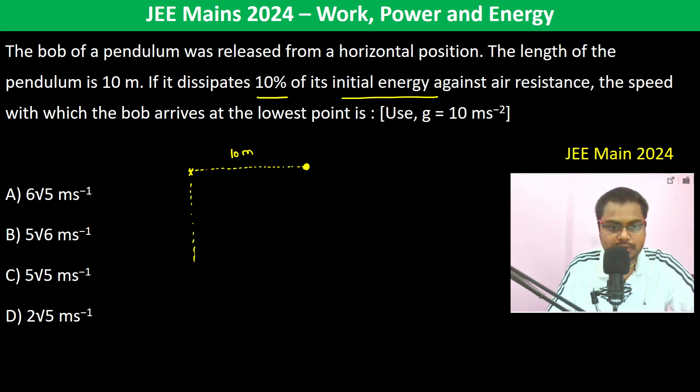So this is the lowest point. We can see the loss of potential energy is mg times 10 meters.